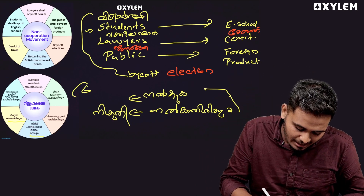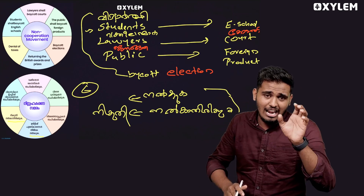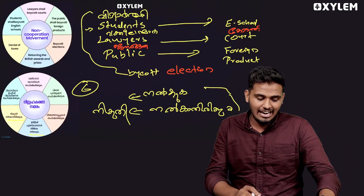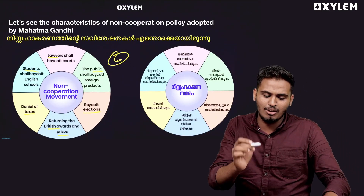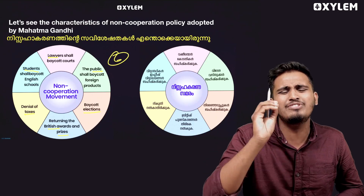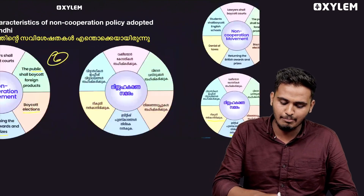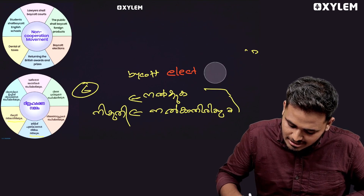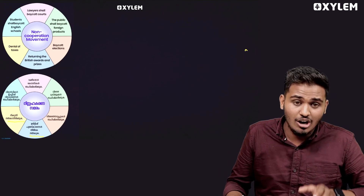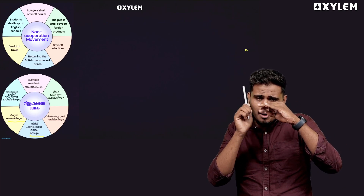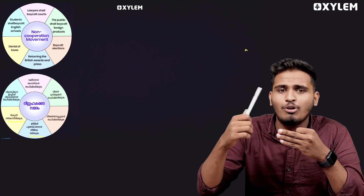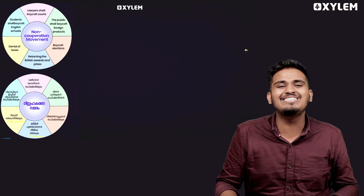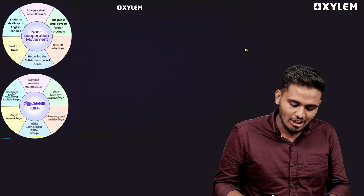This is the 6-mark question — what are the features of Gandhi ji? Let us see the characteristics of the non-cooperation policy adopted by Mahatma Gandhi. What are the features of the non-cooperation movement? Students, public — public boycott foreign products. Look at your four features. As many are known in the non-cooperation movement.